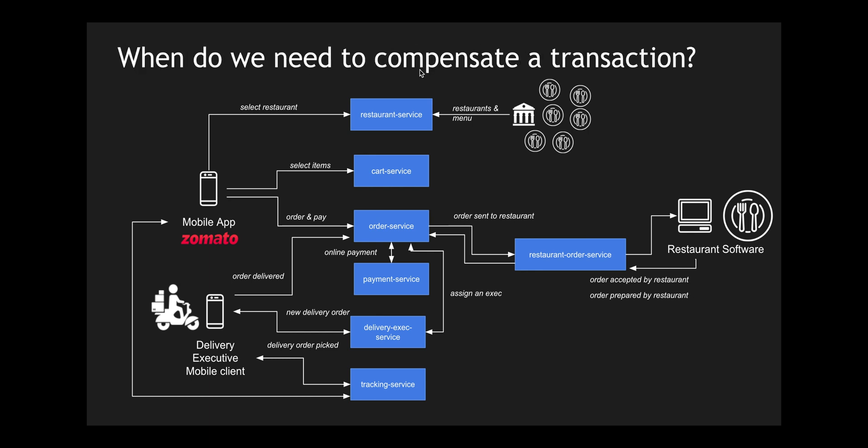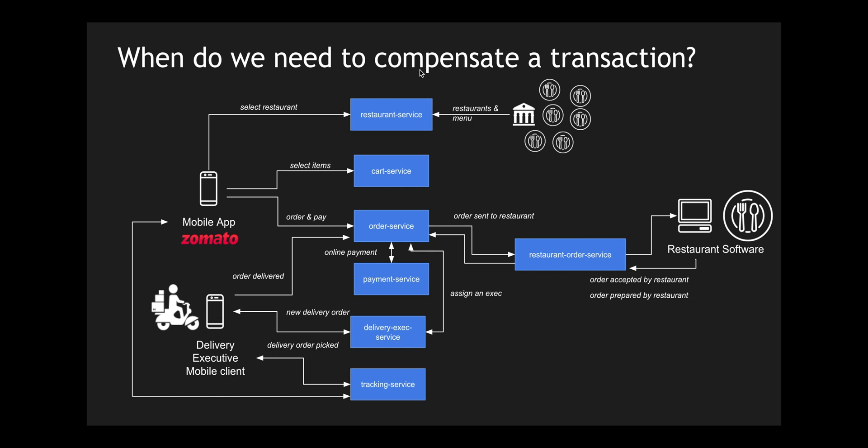This is how a simple successful flow looks like. The question is: why do we need a compensating transaction in this scenario? This looks like a saga pattern because the order service orchestrates every movement of the transaction throughout the lifecycle of the order. It interacts with many different services and acts like a central hub distributing these transactions. But what happens if something fails within this flow?